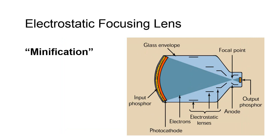The electrostatic focusing lens is a series of bands or rings of metal which have varying positive voltage, through which the circular electron beam must pass. Since the photons have been transformed into visible light photons and now into electrons within the image intensifier, they can be focused. The positive polarity of the electrostatic lenses attracts, or pulls, the negatively charged electrons toward the output phosphor. These lenses are structurally arranged so that they cause the electrons emitted from the photocathode to be focused onto the much smaller output screen. This process is referred to as minification.